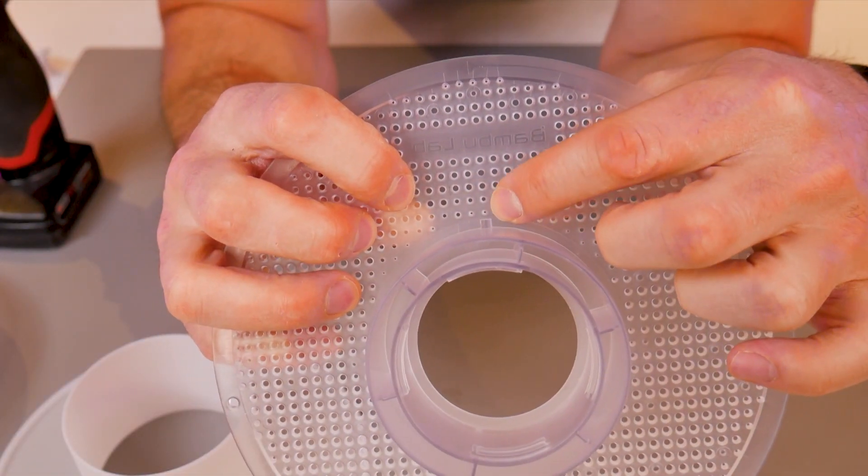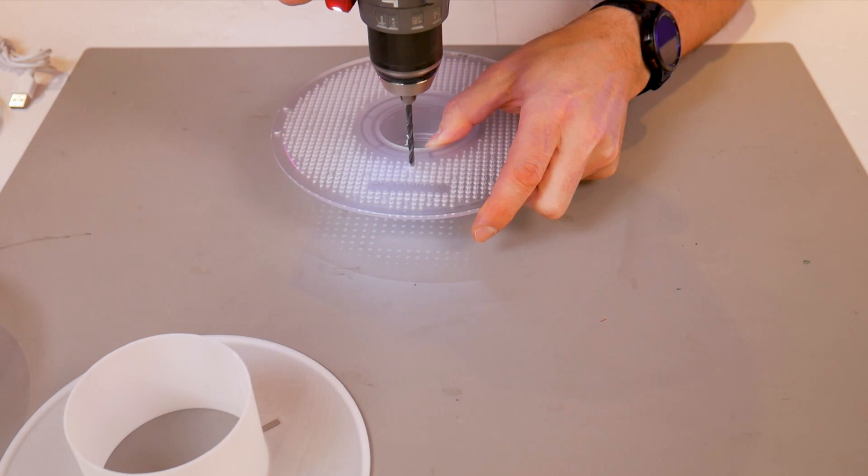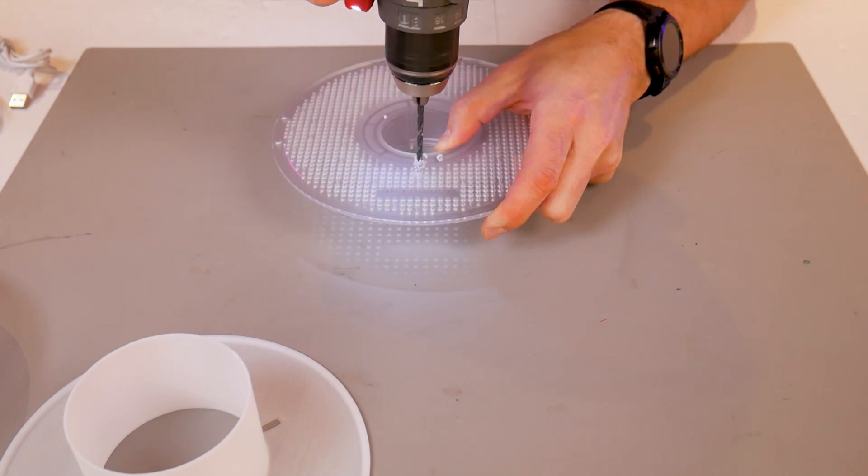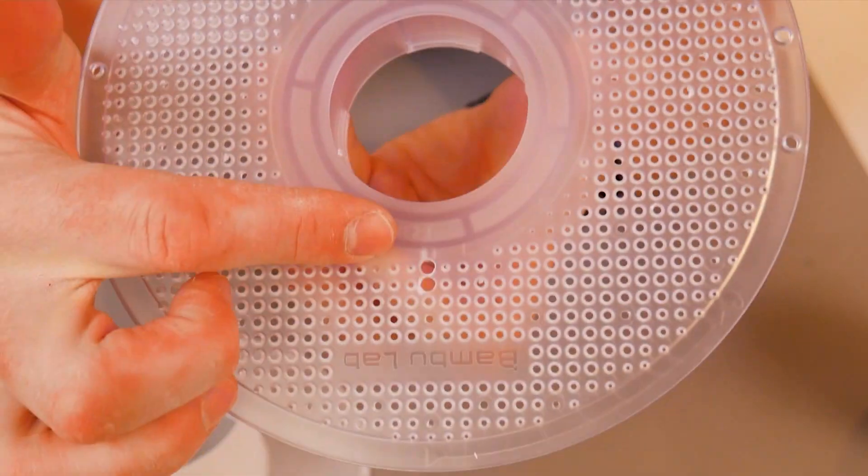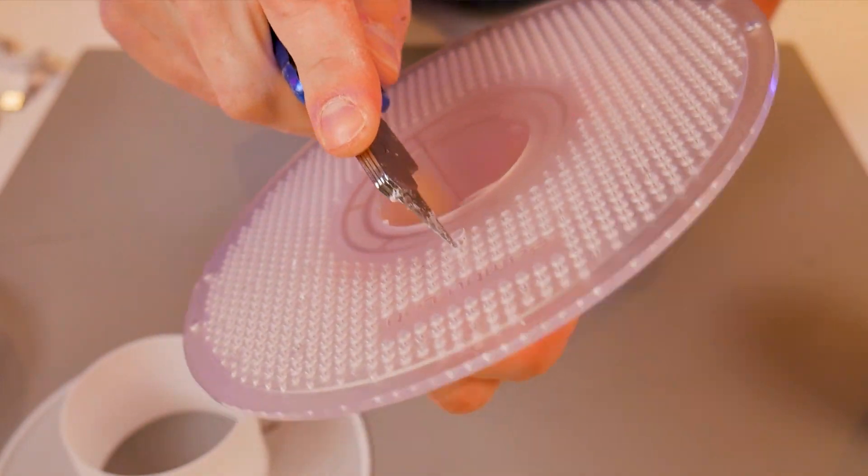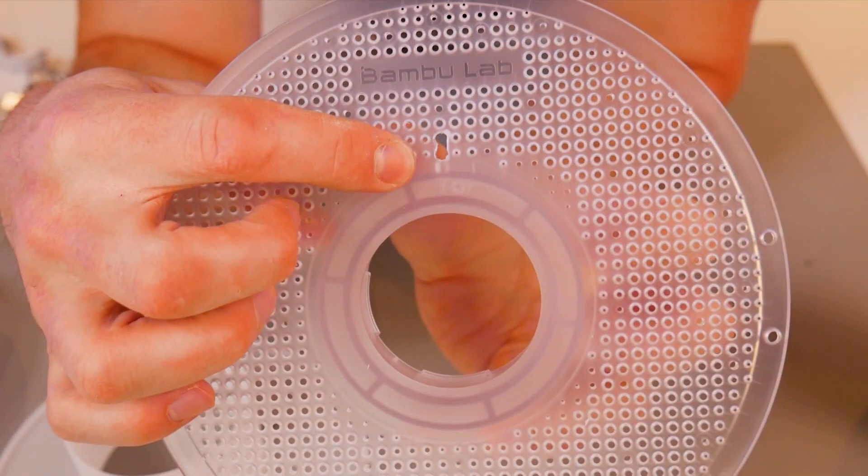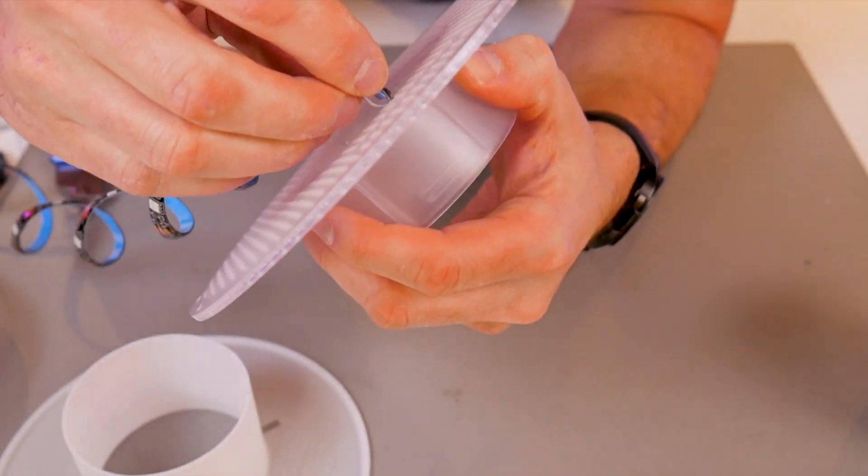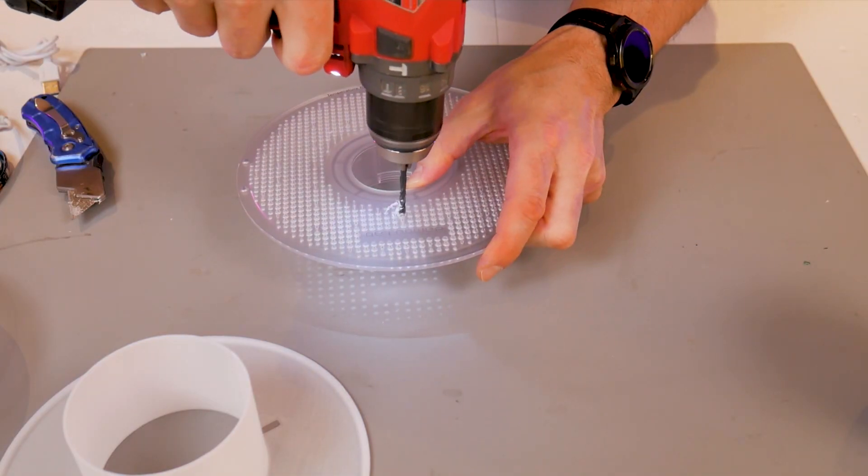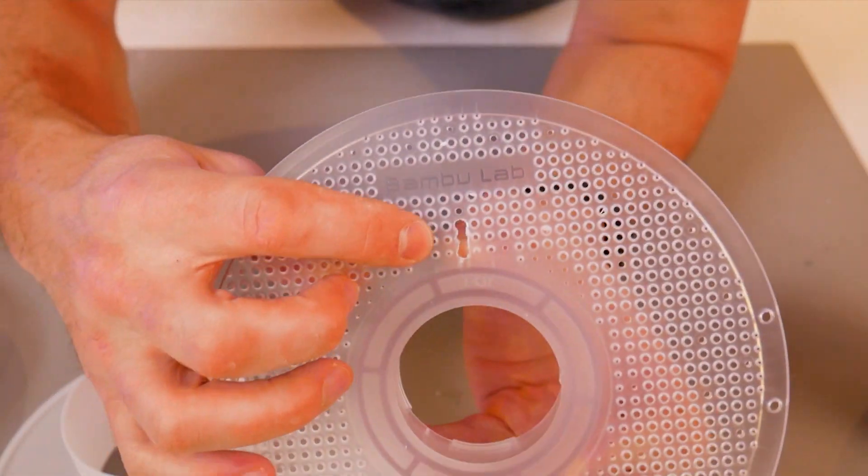There's a cutout section in the rear cover that aligns with several of the holes in the Bamboo Lab spool. This is going to be the entry point for our LED strip, so we're going to take a drill and start drilling out those holes so they're a bit larger. Then we can simply take a razor blade and cut away the material in between so that we get a slot.